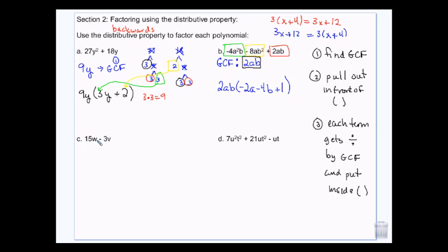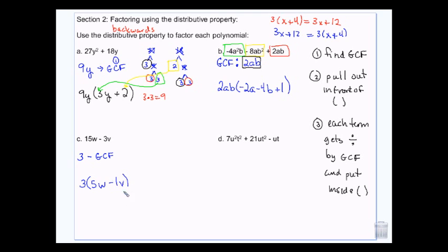It's what they all have in common, and then whatever they have in common, you take it away from them. For example, 15W and 3V — what do 15 and 3 have in common? 3. So they both can divide by 3. They don't have any letters in common — this one has a W, this one has a V — so I'm just going to take the 3 away. 15 divided by 3 is 5, and the W stays. 3 divided by 3 is 1, and the V stays. We don't usually write the 1, so it looks like 3 times (5W + V).